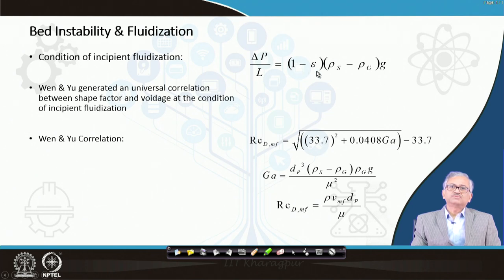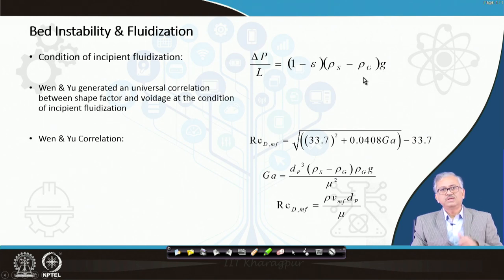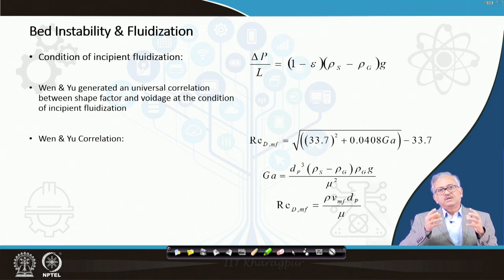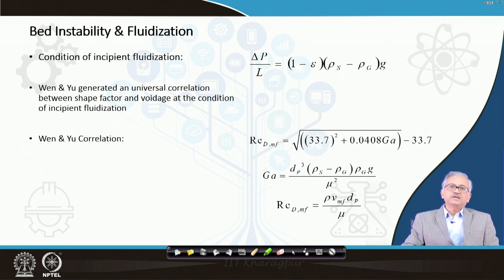The term (1 − ε) gives you the volume of solid per unit volume of bed. Multiplied by ρ_s · g it gives the weight of the bed, and (1 − ε) · ρ_g · g gives the buoyancy. Together, this expression gives the apparent weight of the bed suspended in a gaseous medium.